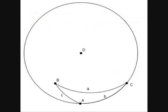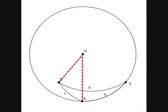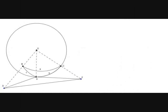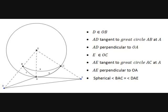Going back to our previous diagram, we can determine side length A by angle BOC, and similarly sides B and C by angles AOC and AOB respectively. We have drawn point D extended from OB such that AD is tangent to the great circle AB at point A and is perpendicular to OA. Similarly, point E is extended from OC, tangent to the great circle AC. In this construction, the spherical angle BAC is the same as angle DAE. Recall that angle AOB equals C and angle AOC equals B.